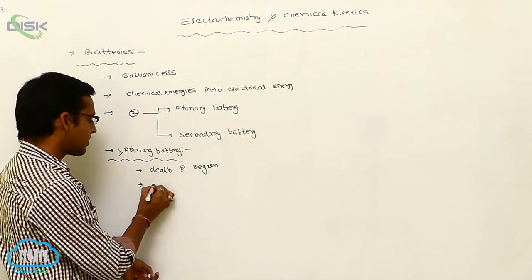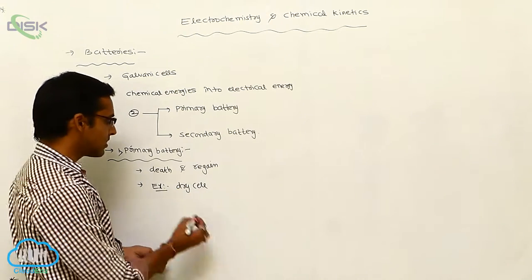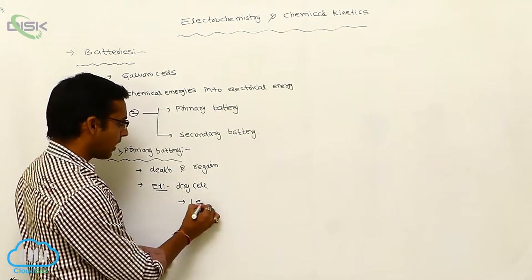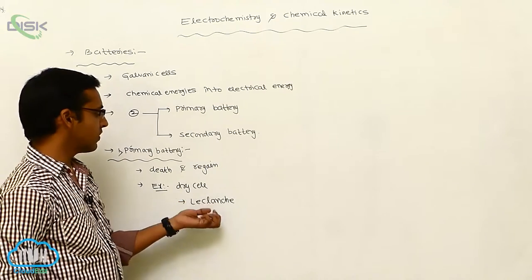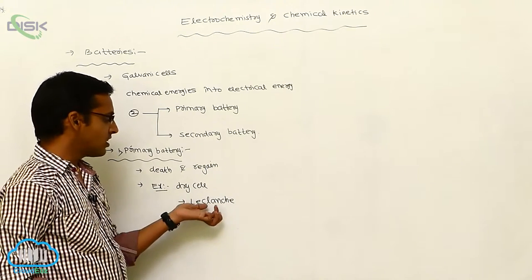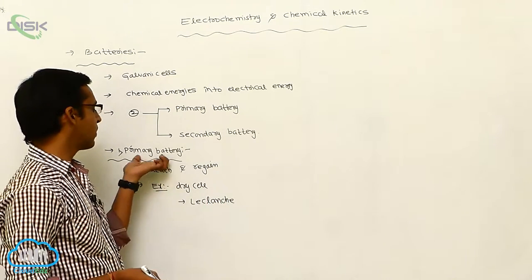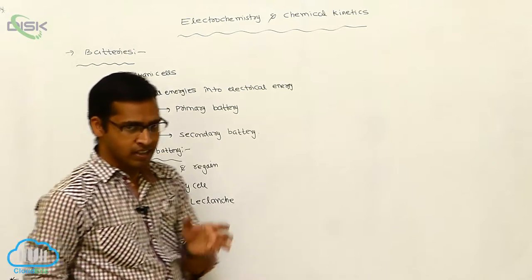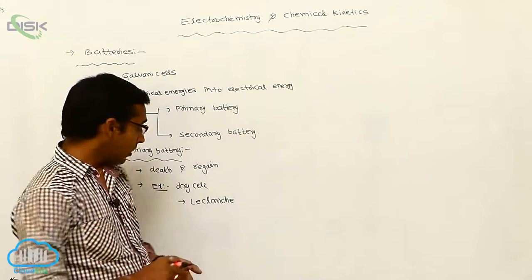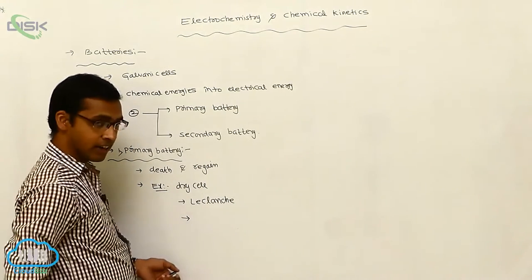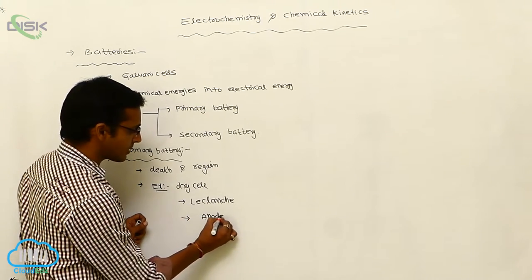The best example of a primary battery is the dry cell. This dry cell was discovered by Leclanché, so it is also called the Leclanché cell. Primary batteries are generally used in transistors and clocks. In any battery, we consider two electrodes: the anode and the cathode.